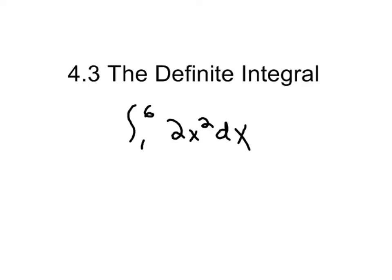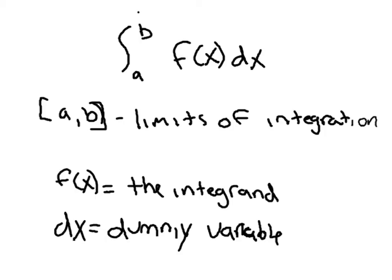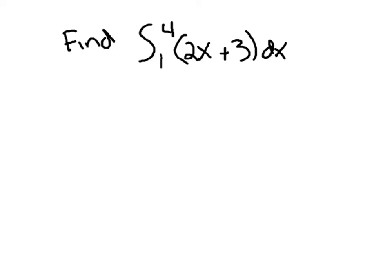We're going to talk today about the definite integral. The definite integral basically just means the area under the curve. The difference between a definite integral and an indefinite integral are these numbers right here. Anytime you have numbers right by that integral sign, that's how you know it's a definite integral. Those numbers are called limits of integration. We know that f(x) is the thing we're integrating, that's the integrand, and dx is the dummy variable. The limits of integration sort of bound the area under the curve. What the limits tell me is we're starting, I want you to look at the area starting at a and going to b. So those are two x values where I'm trying to find the area under the curve from a to b.